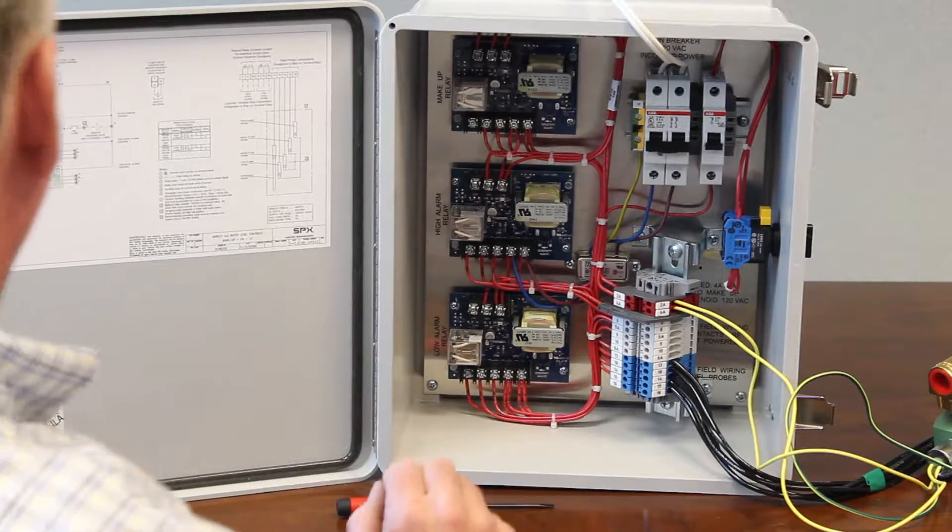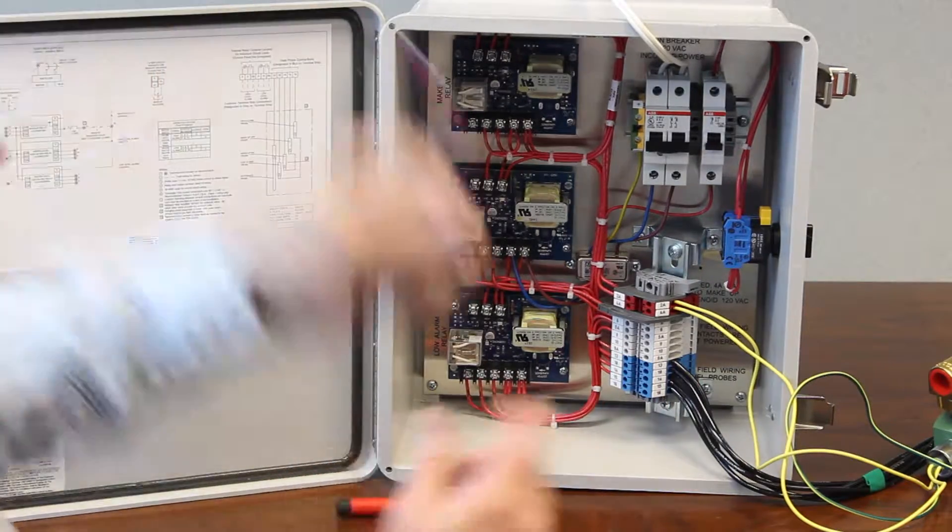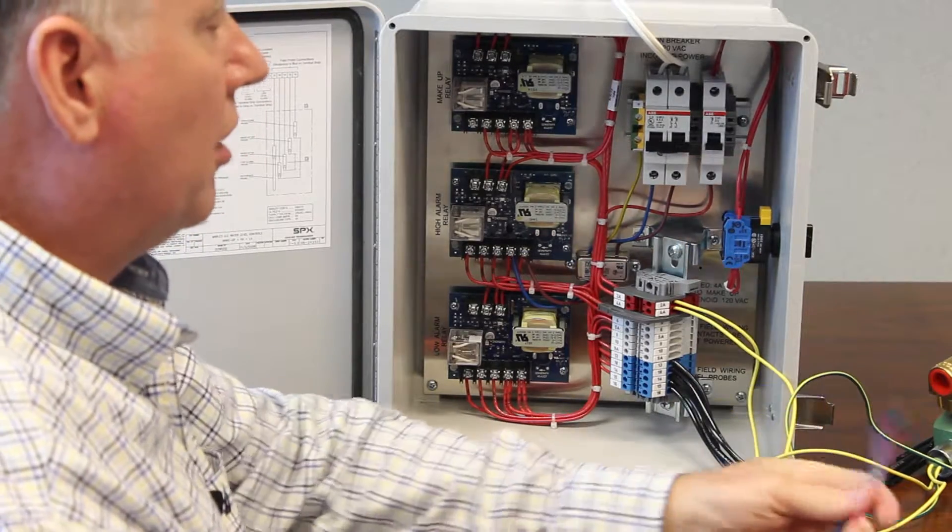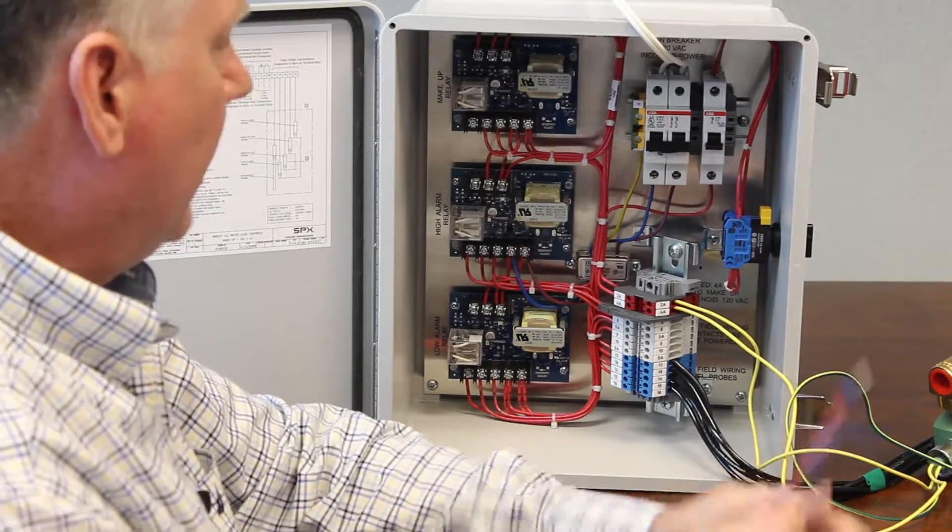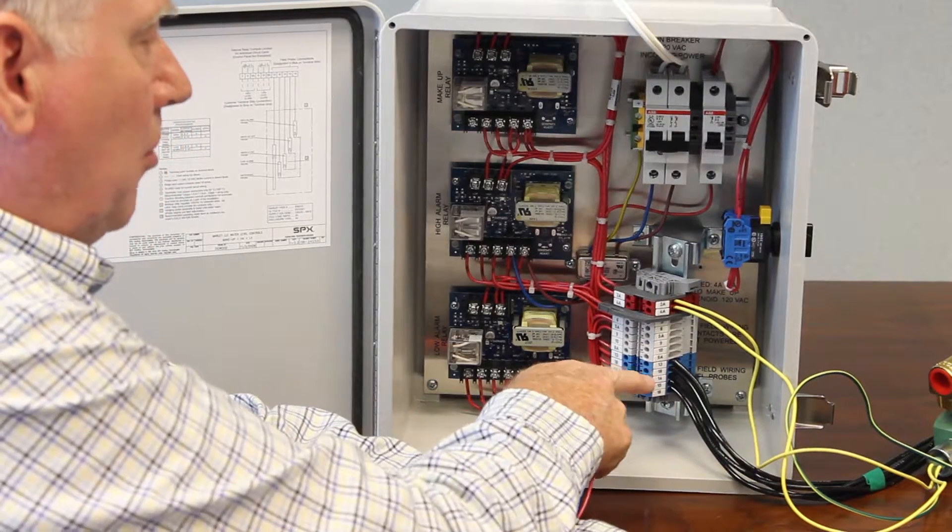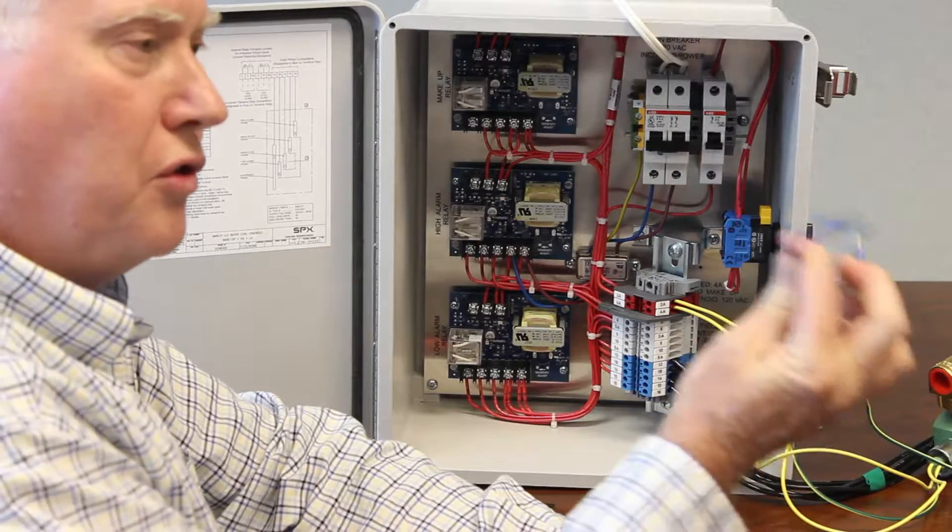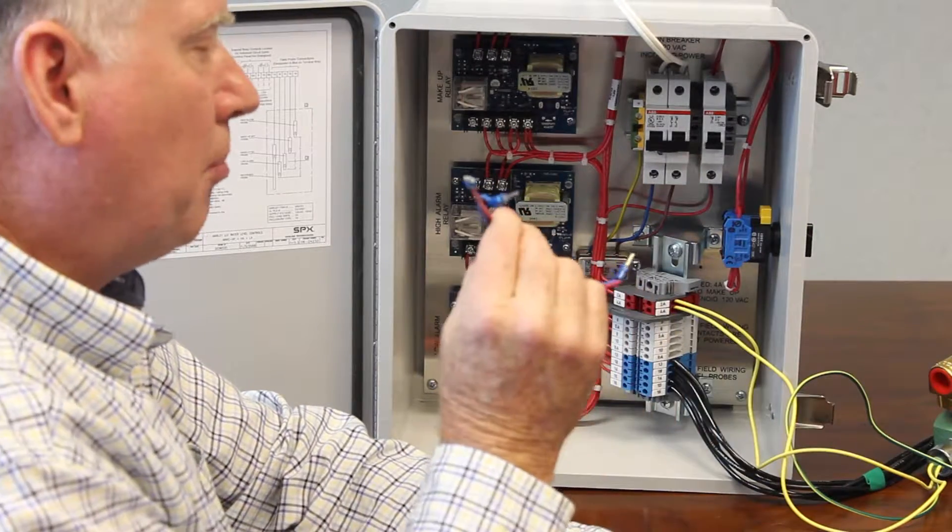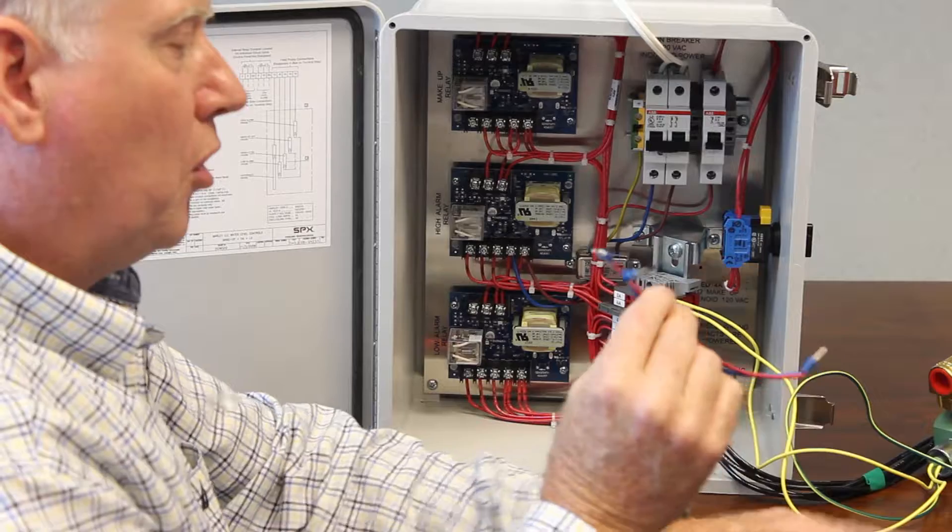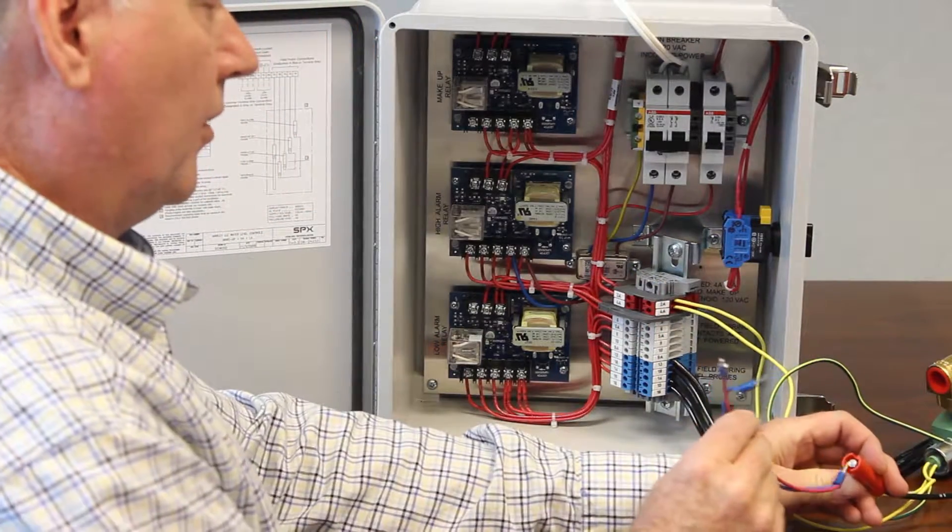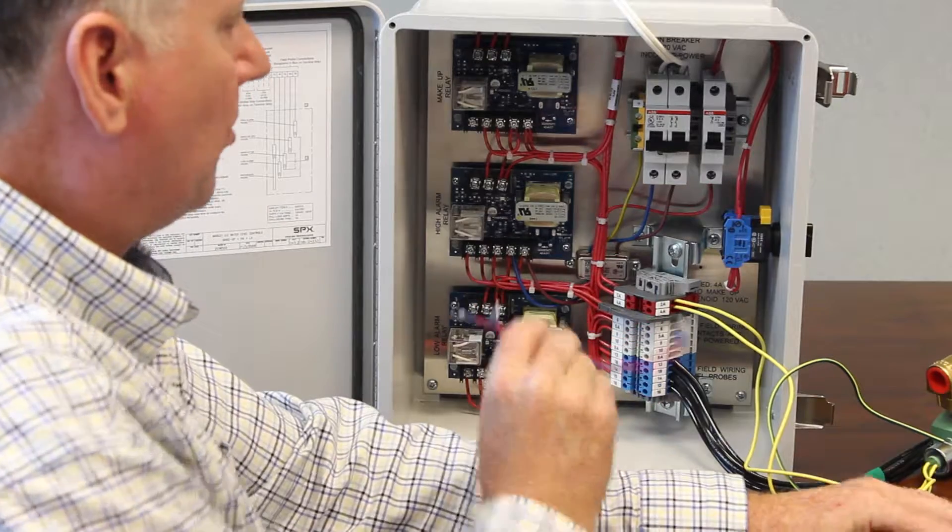Another test that you can do is take your wire jumper again, go out to where the probes are in the tower, and just like we were jumping them at the blue terminal points, you can actually jumper the probe tips themselves and use the wire as the water path. That's going to prove to us that the probes are working all the way from the tip of the probe itself all the way back to these blue terminal points.